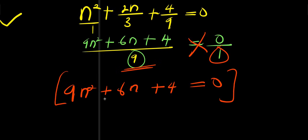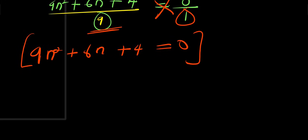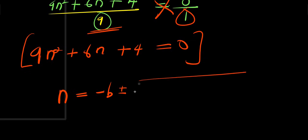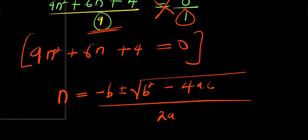This is a quadratic equation that we are going to solve using the quadratic formula. In respect to n: n equals negative b plus or minus square root of b² minus 4ac, divided by 2a. Here a equals 9, b equals 6, and c equals 4.